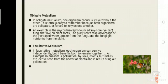In obligate mutualism, one organism cannot survive without another. Both organisms are obligated or forced to rely on one another. An example is the mycorrhizal fungi that live on plant roots — the plant roots benefit from increased water uptake from the fungi, and the fungi get nutrients from the plant. In facultative mutualism, each organism can survive independently but it benefits both to remain together. An example is bees and butterflies, which derive their food from the nectar of plants and in return bring about pollination.